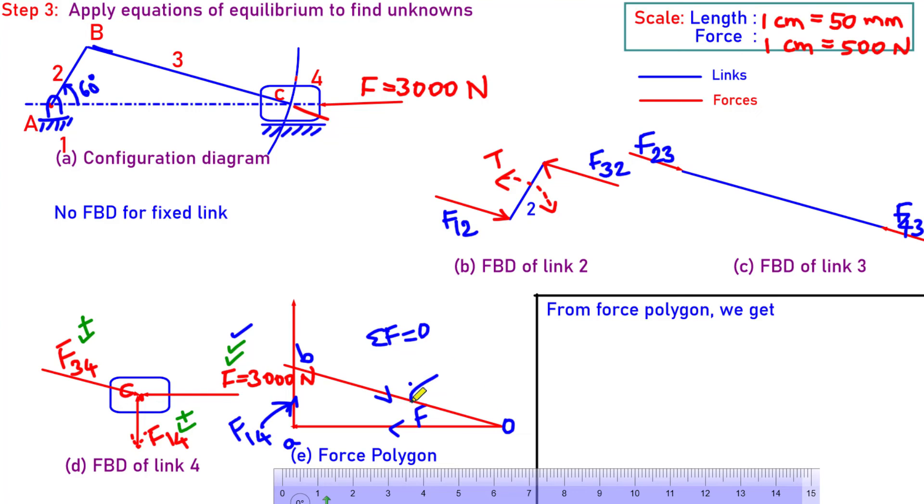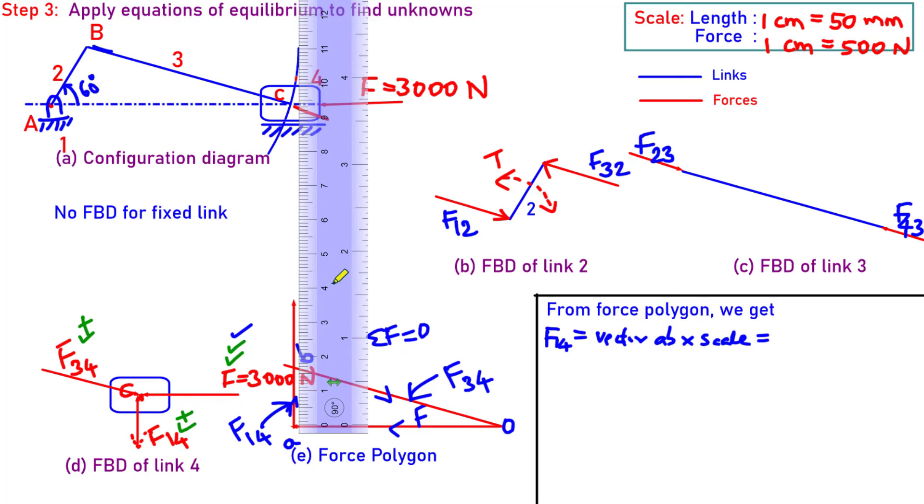This length AB gives us F14. This length gives us F34. F14 is equal to measure vector AB multiplied by the chosen scale. For me it comes around 1785 Newton.